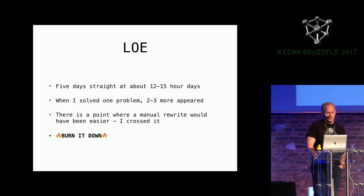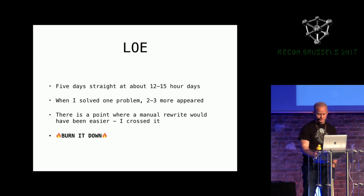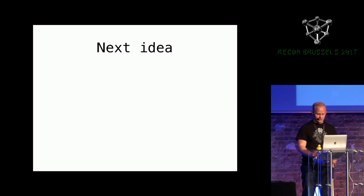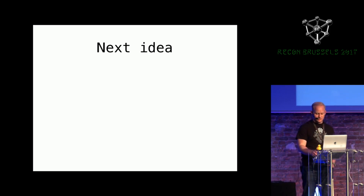I went at it for five days straight, 12 to 15 hour days. When I solved one problem, more popped up — some payloads had conditional statements and conditional loops. I was crossing the threshold where if I had just sat down and written these payloads out, I probably could have knocked out 15 to 20 in that amount of time. So I decided to burn it down and go back to the original idea: replace the Fuhrer Hash API with something else.